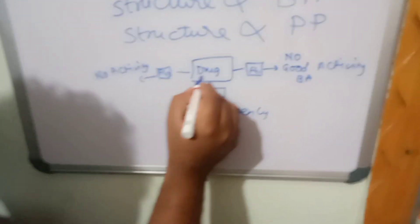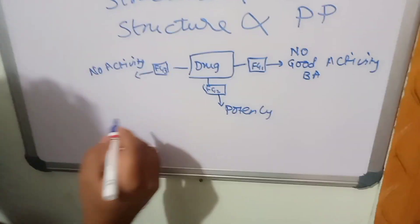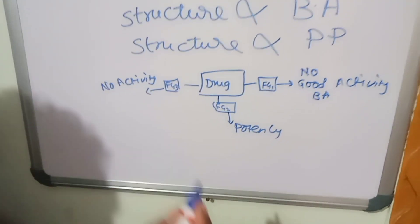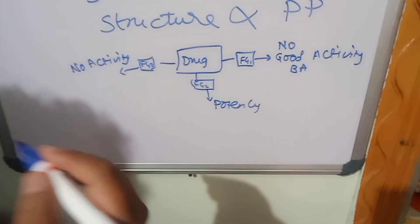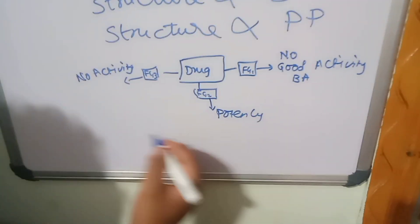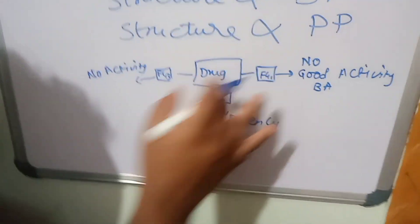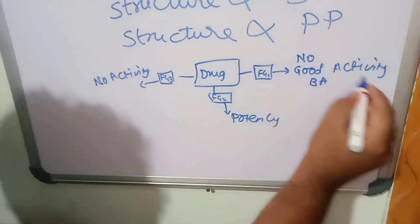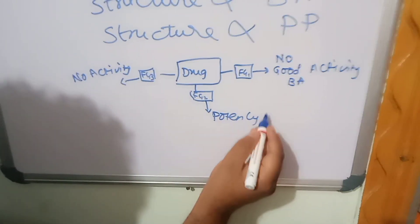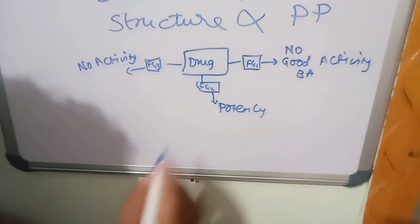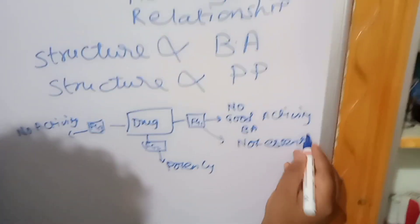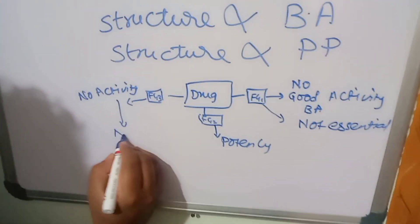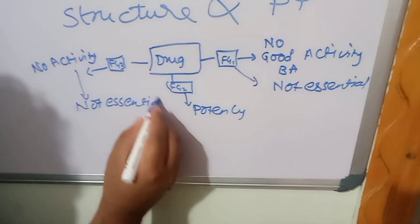These are the functional groups in the chemical structure of a drug. Functional groups are groups which are essential for the activity. Functional groups may be carboxylic acid, aldehydes, ketones, alcohols, or esters. A drug contains various functional groups. By observing which groups show good activity, potency, or no activity, we can determine that functional group 1 is not essential for activity, and functional group 3 is also not essential.